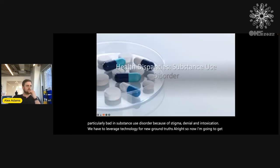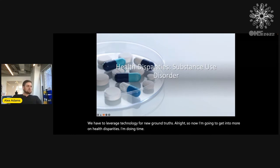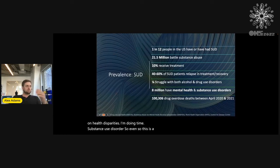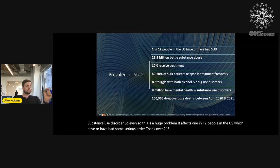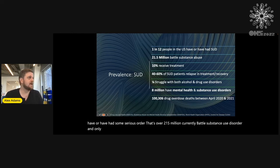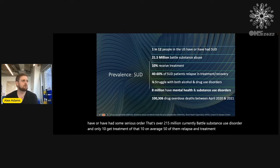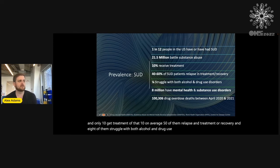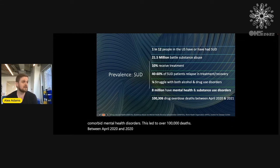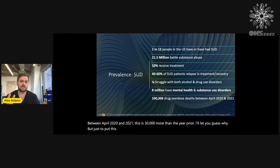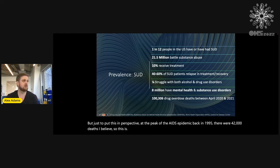Now I'm going to get into more on health disparities — specifically substance use disorder. This is a huge problem: it affects one in 12 people in the US, or over 21.5 million, who currently battle substance use disorder, and only 10% get treatment. Of that 10%, on average 50% relapse in treatment or recovery. An eighth of them struggle with both alcohol and drug use, and 8 million have comorbid mental health disorders. This led to over 100,000 deaths between April 2020 and 2021 — 30,000 more than the year prior. Just to put this in perspective: at the peak of the AIDS epidemic in 1995, there were about 42,000 deaths. This is almost 250% higher.